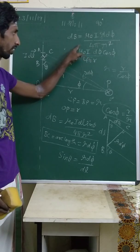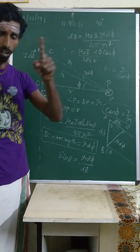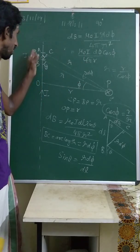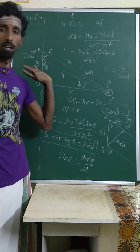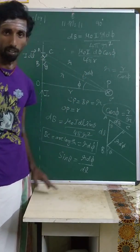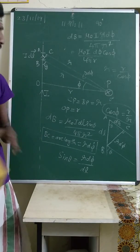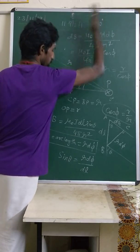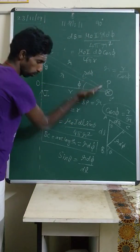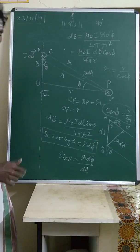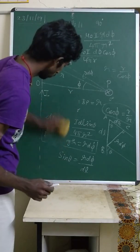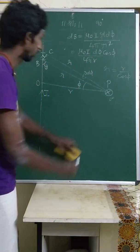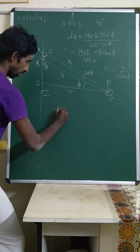Now r̄ is a constant, and everything else is constant, so we have only one variable: φ. Both θ, dl, and r have all been converted to the single variable φ. The limits are from minus π/2 to plus π/2 for an infinite wire.